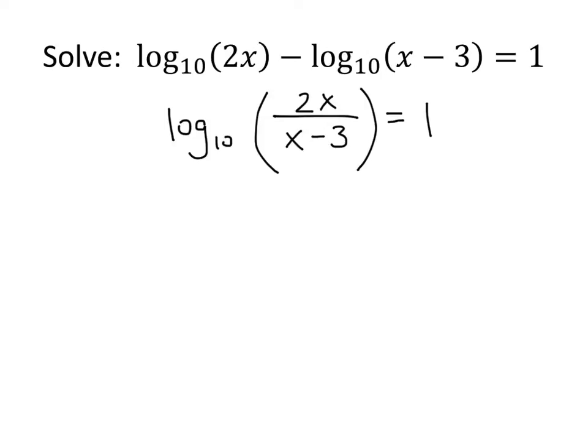Now I have a single logarithm, and now what I can do is rewrite this equation in exponential form because it's a simple logarithmic equation. It's just the log of something equals something. So when I rewrite this in exponential form, what I get is 2x divided by x minus 3, the thing inside the log, equals the base raised to the power that equals the value of the log. So if you look back at some of the earlier videos where we were rewriting log equations in exponential form and vice versa, that's all I'm doing here.